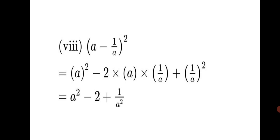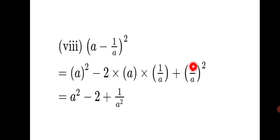Eighth sum: a minus 1/a, the whole square. Using (a−b)² formula: a² − 2×a×(1/a) + (1/a)². The a's cancel in the middle, leaving −2×1 = −2. The last term is 1/a². Final answer: a² − 2 + 1/a². We use whichever formula fits — (a+b)² or (a−b)² — where a and b represent the first and second terms.